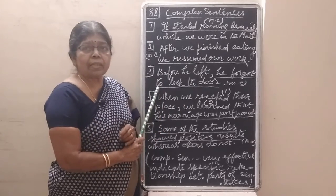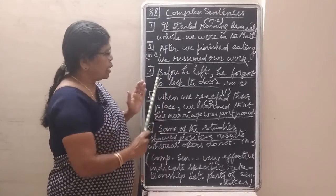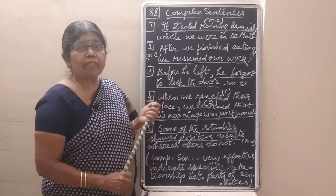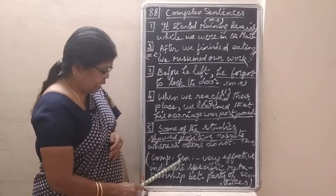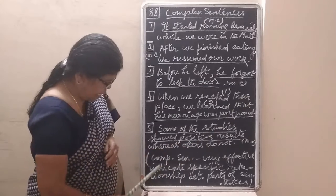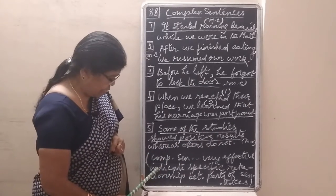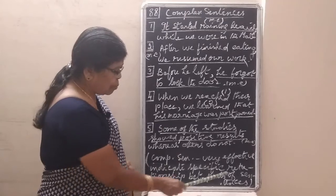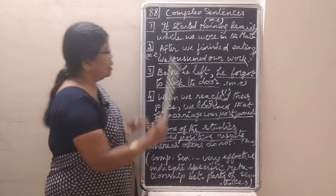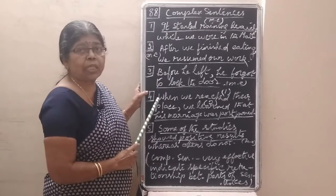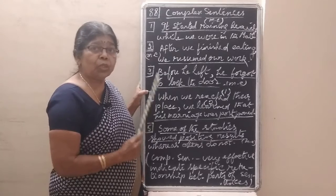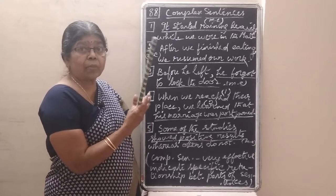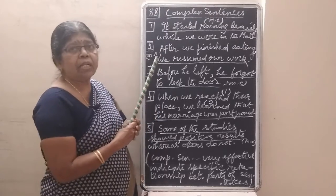We use subordinate clauses to give additional information. The subordinate clauses very effectively indicate the relationship between parts of the sentence. Sometimes more than one subordinate clause can be used in a sentence — one or two subordinate clauses. So the relationship between clauses and parts of the sentence is effectively expressed in complex sentences.